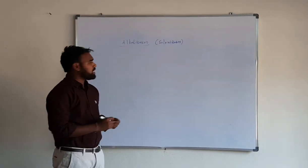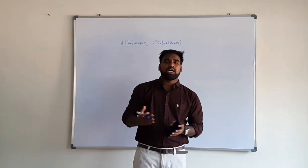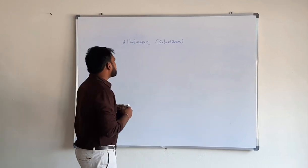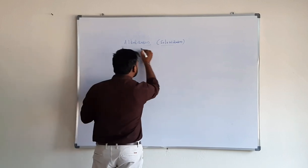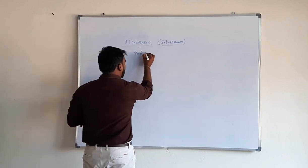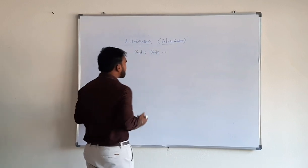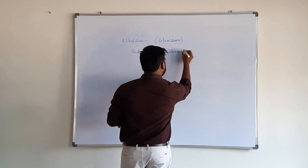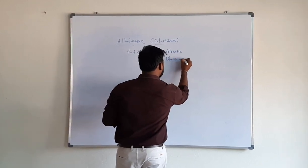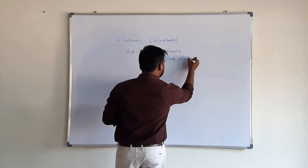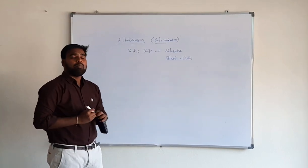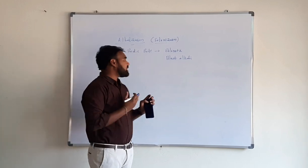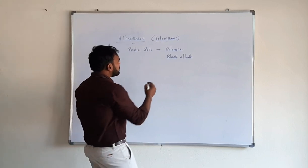Alkalization, also known as solonization, is the accumulation of sodium in the soil profile or on the exchange complex. Due to alkalization, sodic soils are formed, also known as solonetz or black alkali soils. In sodic soils, there are more carbonates and bicarbonates of sodium compared to neutral salts, and the dominant cation is sodium.